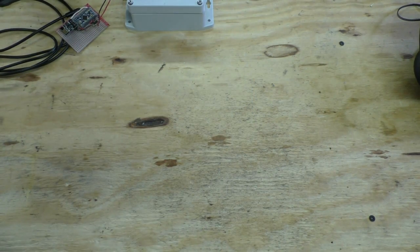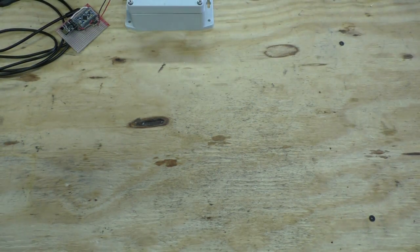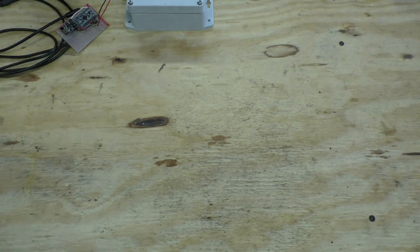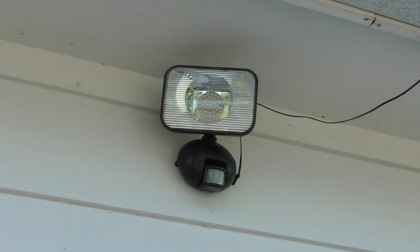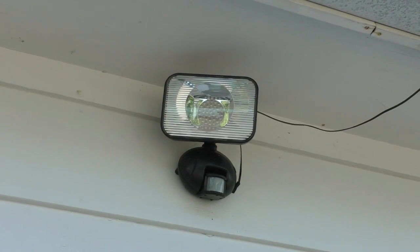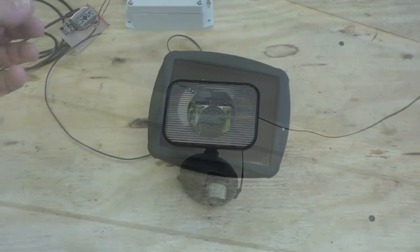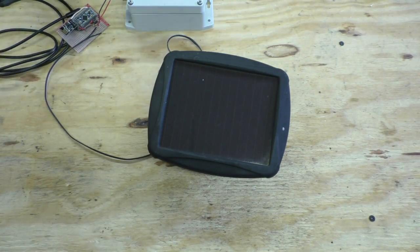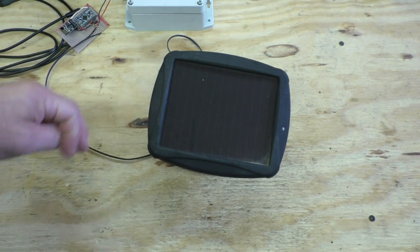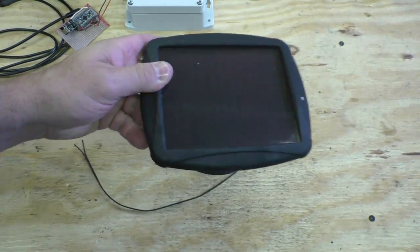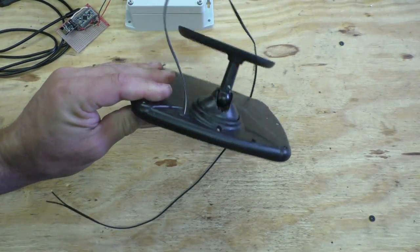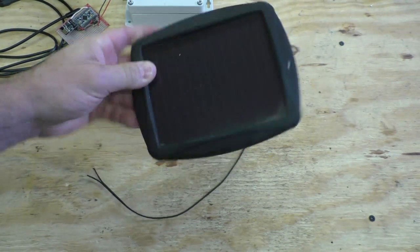And I'm also going to reuse this - it is a solar panel that came off of this motion sensor light. It worked great for a while but it quit working a couple years ago. It's just been on the side of the shop. I have already checked it out, the solar panel is good, so I'm going to reuse this and it's going to power this whole project.